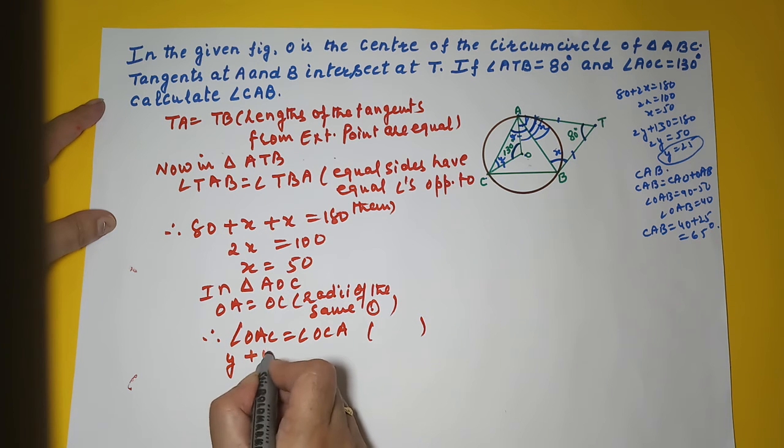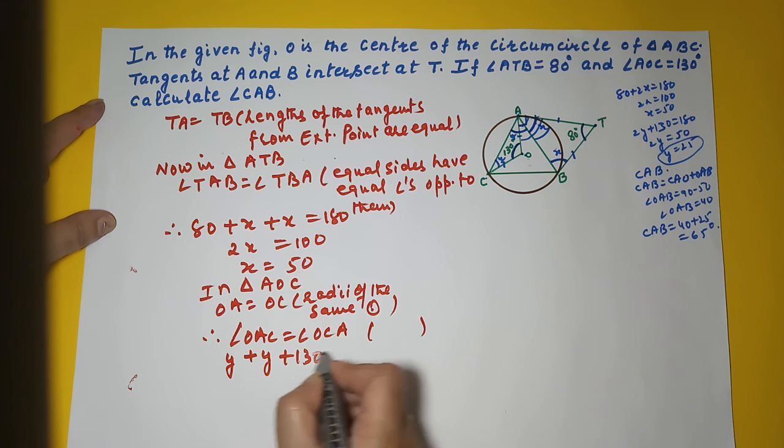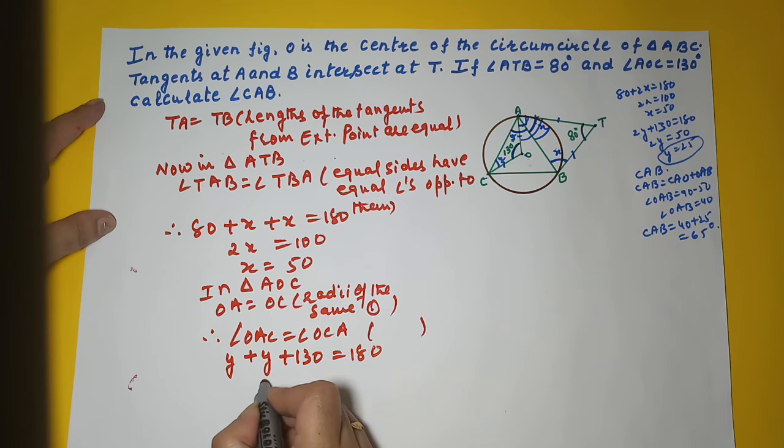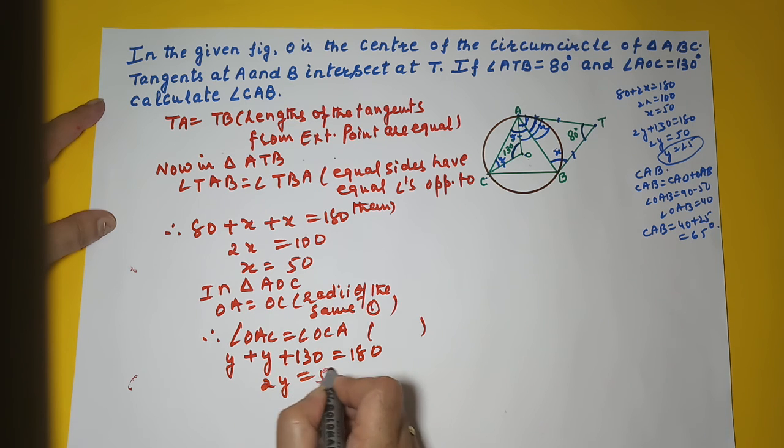So you can write Y plus Y plus 130 equal to 180, so 2Y equal to 50. You got your Y as 25.